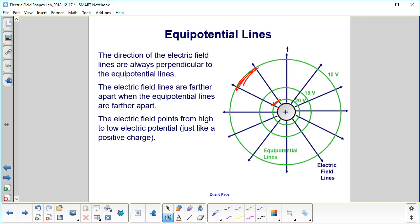Here they're a lot closer at the larger voltages. That's telling us the electric field points from high to low electric potential, just like a positive charge does.